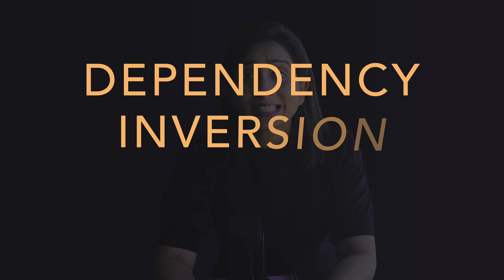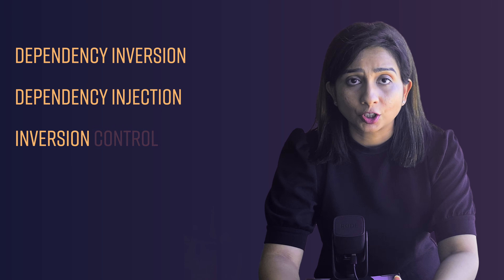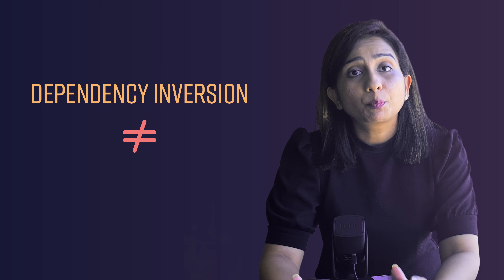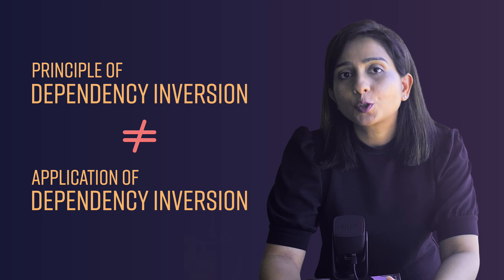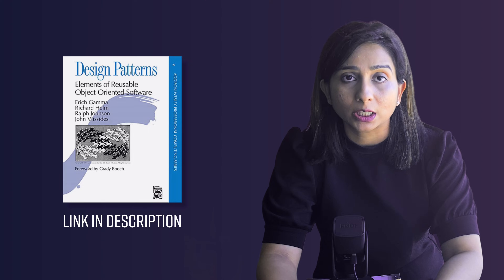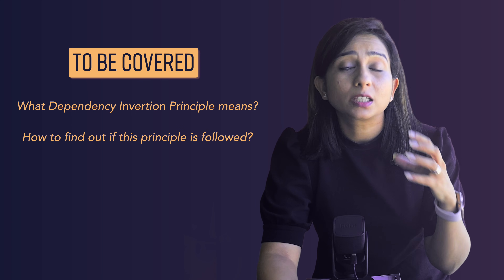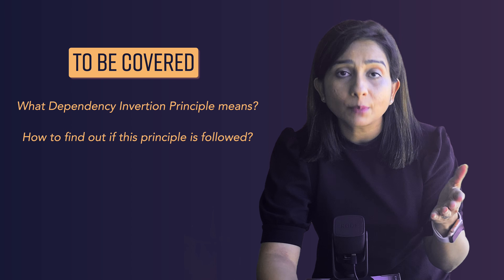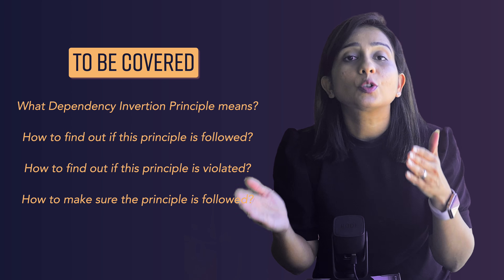Hello and welcome to Sudoku. In this video, we are going to talk about the last principle of SOLID, which is called the Dependency Inversion Principle. Now dependency inversion, dependency injection, inversion of control — all these terms mean different things. The principle of dependency inversion versus the application of dependency inversion are two completely different things. In this video, I will focus on what the Dependency Inversion Principle means, how you can spot if this principle is being followed or violated, and how you can write code and design classes so that this principle is followed.